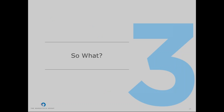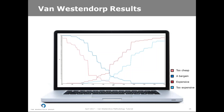So what are the outcomes of the Van Westendorp methodology? Van Westendorp results are displayed graphically with four curves, one for each price type: too cheap, bargain, expensive, and too expensive. The y-axis indicates the normalized frequency and the x-axis indicates price. Two of the four cumulative frequencies are inverted so that it creates four intersection points and two price ranges.